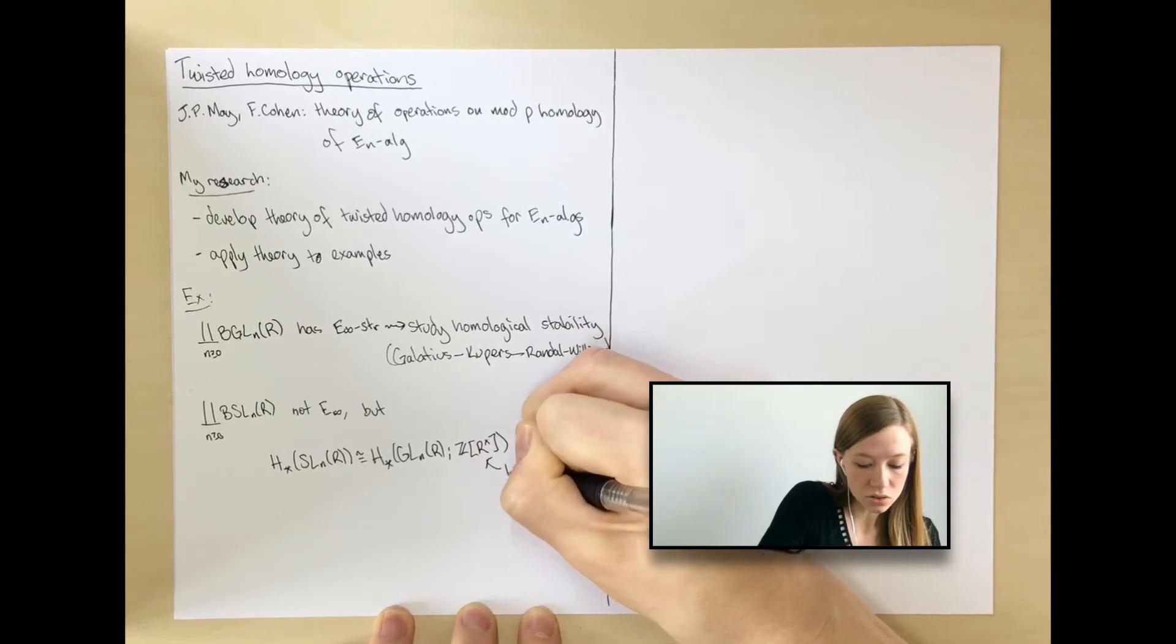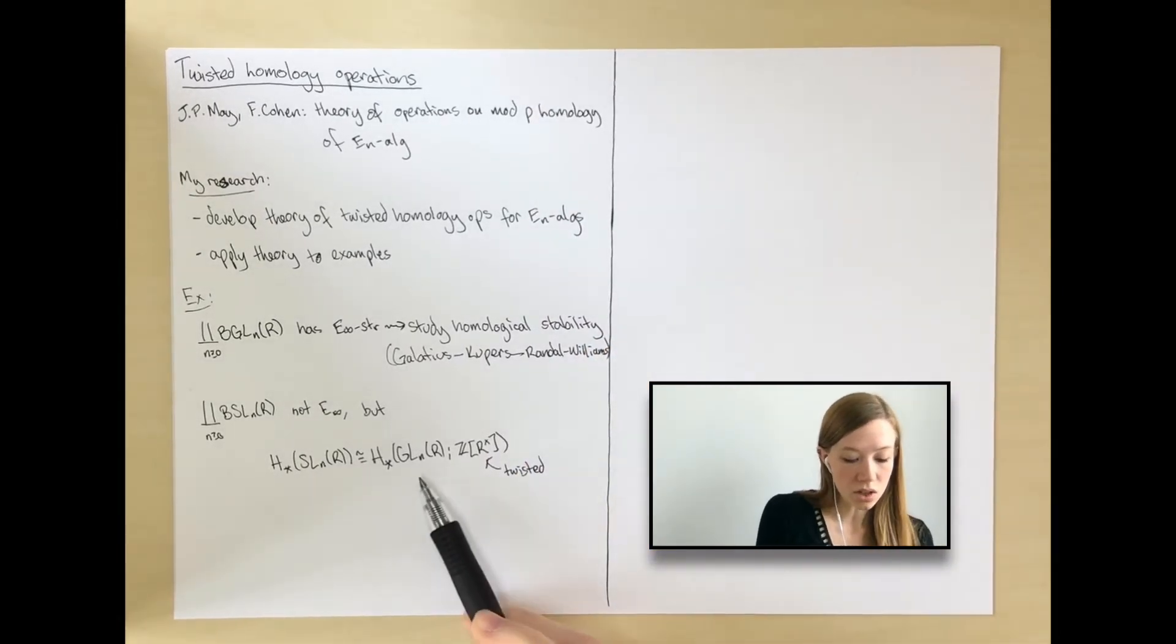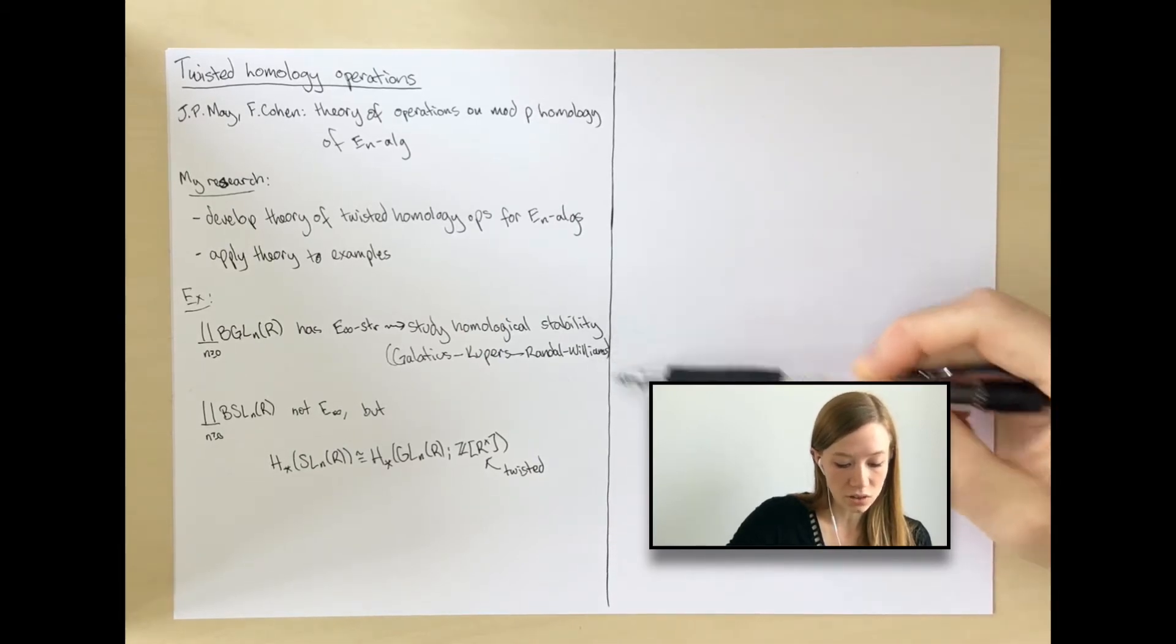So if you allow these twisted coefficients, you can use the E-infinity structure on general linear groups to say something about the homology of special linear groups with this framework that they develop.